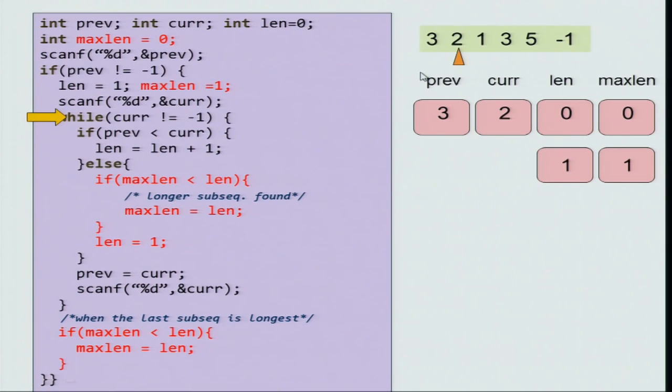So, remember that previous is now 3 and current is 2. So, current is not minus 1 therefore, you enter the while loop. Previous is less than current is false because previous is 3 and current is 2. Therefore, you enter the else part. Max length less than length is false both are 1. Therefore, you start a new sequence with length equal to 1.